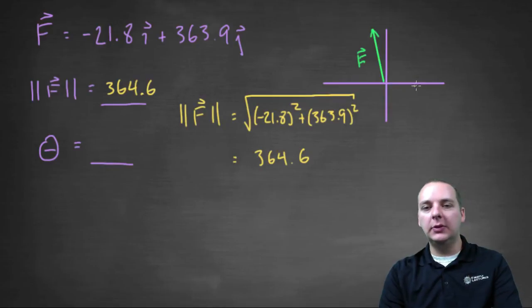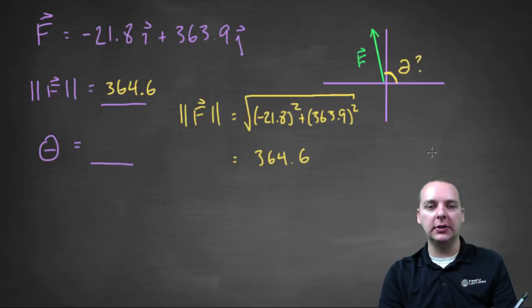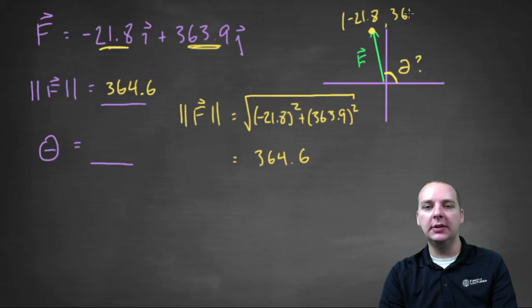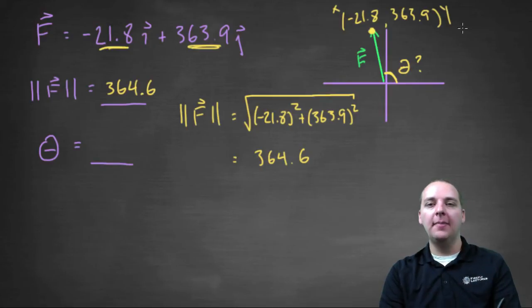And then the last thing we want is the angle that it makes with the positive x-axis. That would indicate its direction. So how would we find that? Well, we have basically the x-component and y-component for this vector here. So if you had this point here, this terminal point of negative 21.8 comma 363.9, and this is like your x and this is like your y written as an ordered pair, I think we could use a tangent relationship.